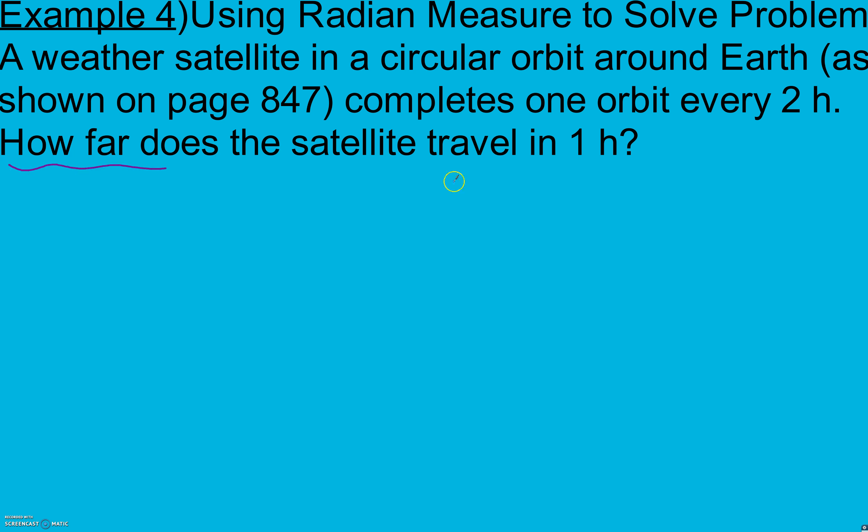We want to know how far it travels. We want to know its distance around this Earth. It goes the full way every two hours. So two is the whole, and we have one hour, which means it goes a half revolution. It goes around half.